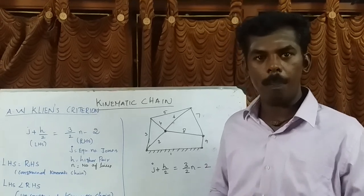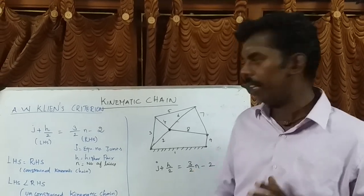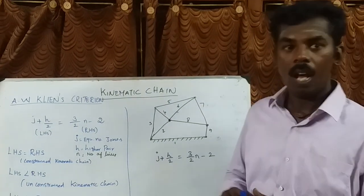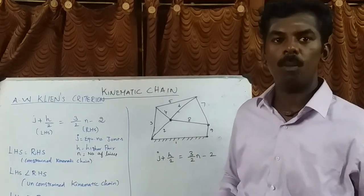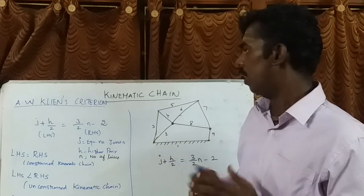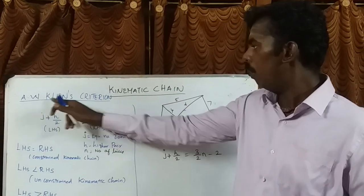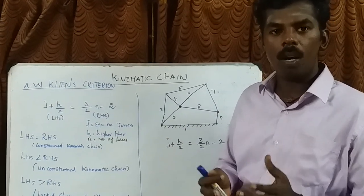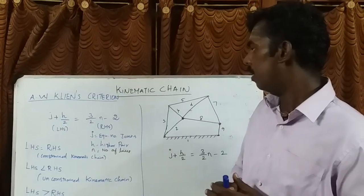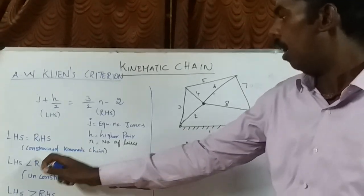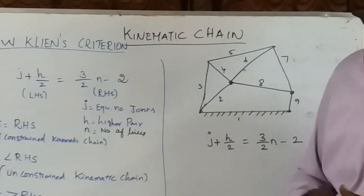In a kinematic pair, links are coupled such that the last link is joined to the first link, and to transmit definite motion it is called the kinematic chain. Next, the Aw Cline's criterion is used to determine the nature of a kinematic chain — whether it is a constrained kinematic chain, unconstrained kinematic chain, or locked chain or structure.